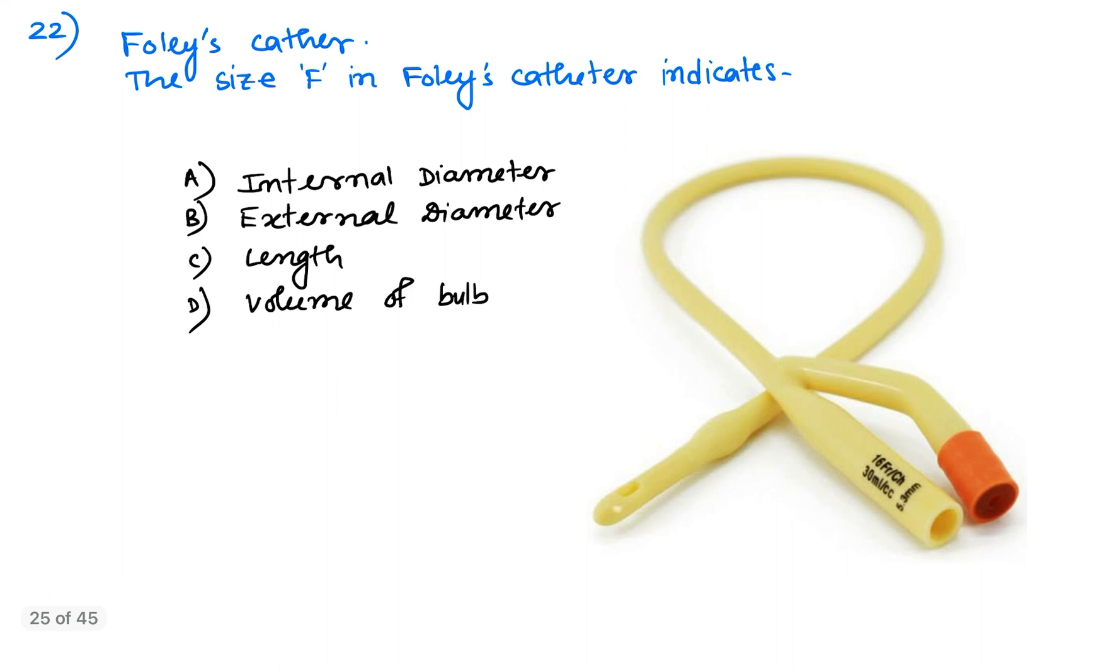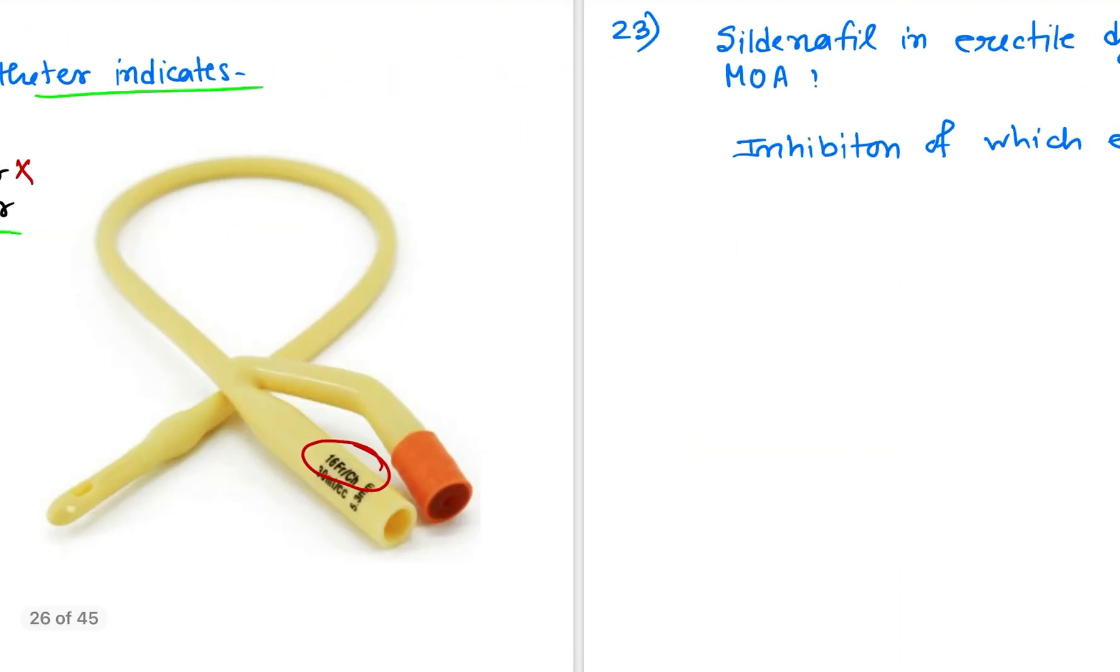Coming to question number 22, Foley catheter. The size F in the Foley catheter indicates, you can see here is written 16F for French. So in this Foley catheter, F denotes external diameter of the tube. It is the external diameter, not internal diameter, not length of the catheter, or volume of the bulb.